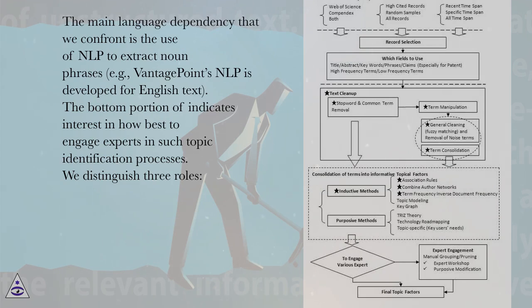The main language dependency that we confront is the use of NLP to extract noun phrases, for example, Vantage Point's NLP is developed for English text. The bottom portion indicates interest in how best to engage experts in such topic identification processes.